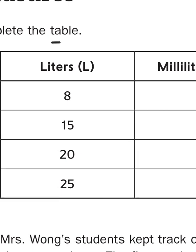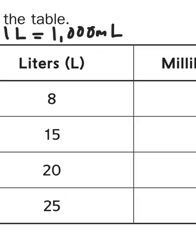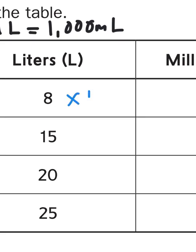So I'm just going to write that at the top. 1 liter is equal to 1000 milliliters. So if I want to know the contents of 8 liters in milliliters, I would just have to multiply that number times 1000.